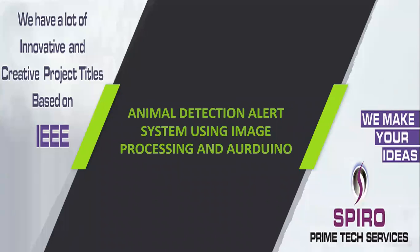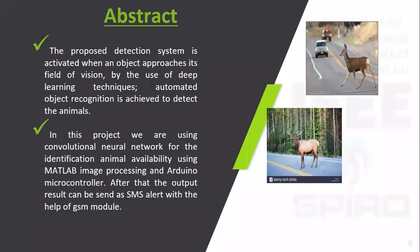Project code ITAMP 54, project title: Animal Detection Adapt System using image processing and Arduino. In this project, the images on the right side are animal images. Our aim is to detect animals crossing on the road using MATLAB image processing and Arduino. The main output comes under MATLAB image processing. The status of animal detection can be sent through SMS to the particular security application in order to avoid difficult conditions.